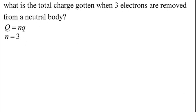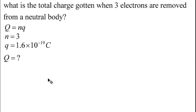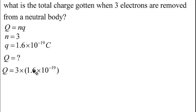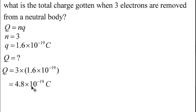The constant e is 1.6 times 10 to the power of minus 19 coulombs. We use a positive sign here because removing electrons leaves behind positive charges. So Q equals 3 multiplied by 1.6 times 10 to the power of minus 19, which gives us 4.8 times 10 to the power of minus 19 coulombs.